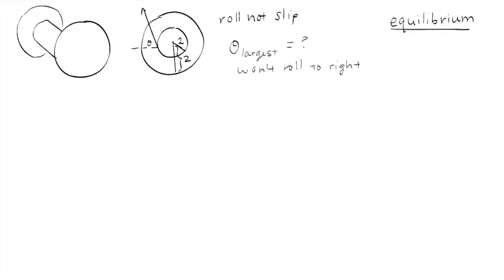At equilibrium, there are two cases we have to consider. The first case is that there is zero net force. And the second case is that there is zero net torque.